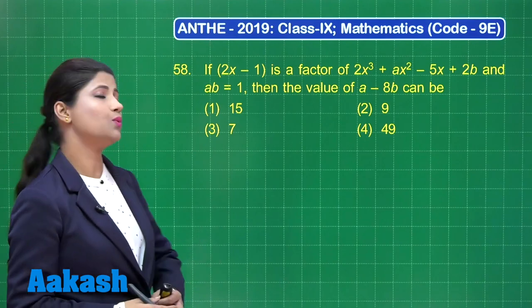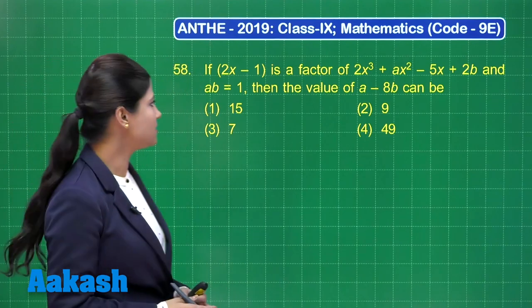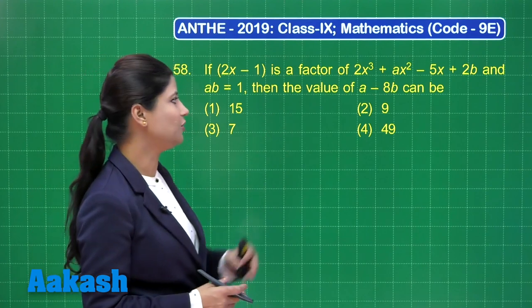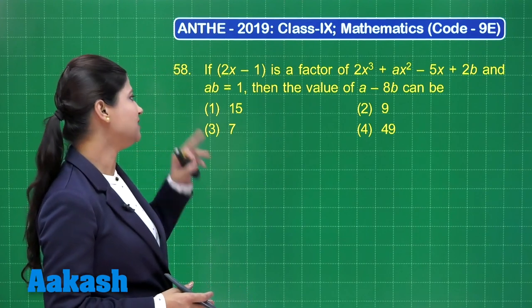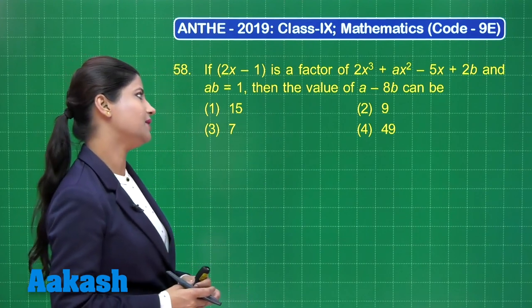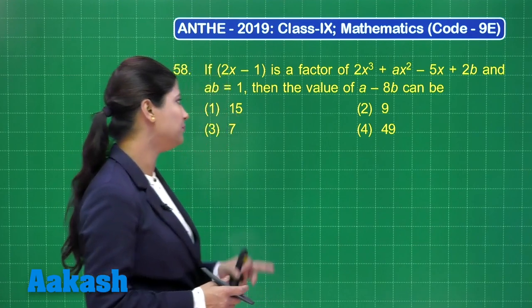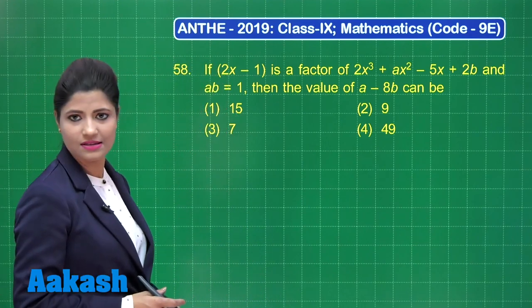Question number 58 states: if 2x minus 1 is a factor of this given polynomial and a into b is equal to 1, then the value of a minus 8b can be which of these options?